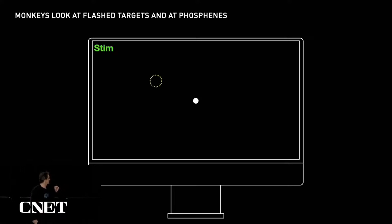The monkey sees the flash and naturally makes a saccade towards it. This tells us not only where in the visual field the flash occurred, but we can also change the current that we inject in that electrode to see how often he makes that saccade, how noticeable, or how big perhaps, the stimulation of the phosphene is that we're producing.